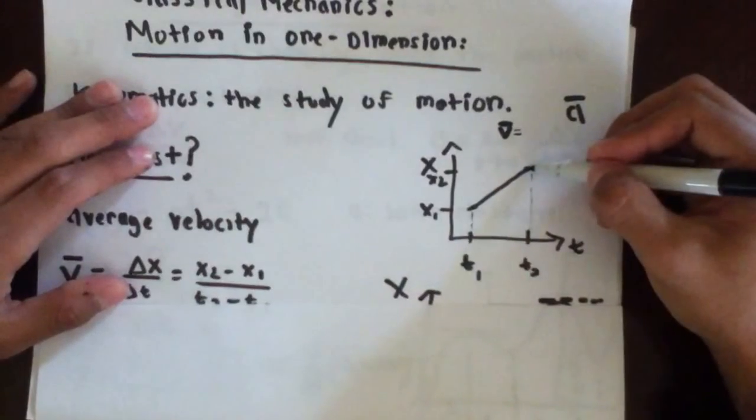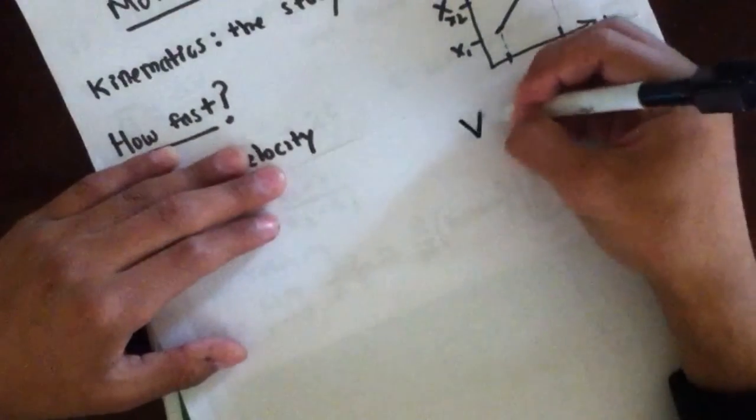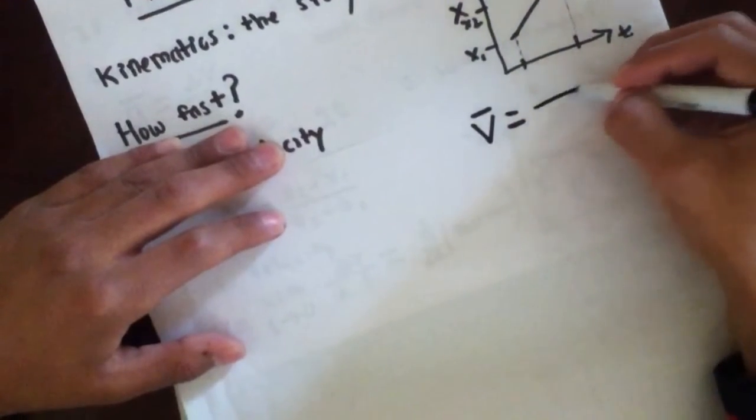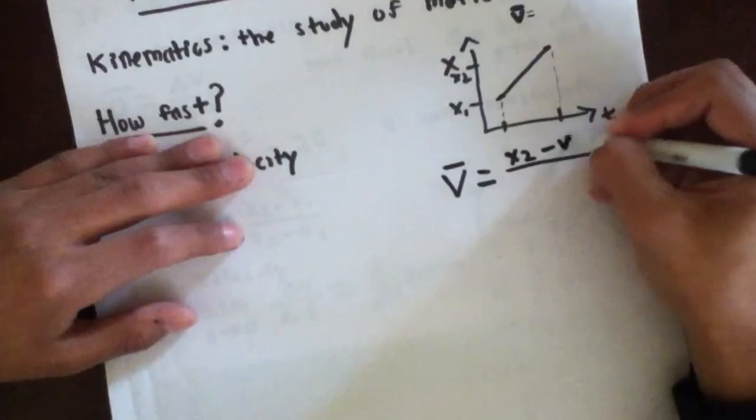and at t2, our position is x2. And this is how we conventionally will write this. We write v bar is equal to the final position minus the initial position.